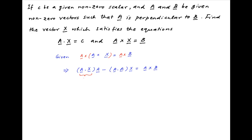Now we are given that the dot product a dot x is equal to the scalar c, and also a dot a is equal to the square of the absolute value of vector a. Therefore the above equation can be written as: the absolute value of vector a whole square times vector x is equal to c times vector a minus a cross b.